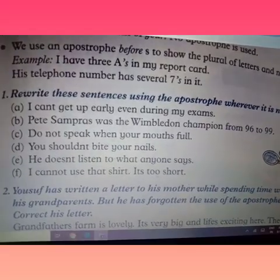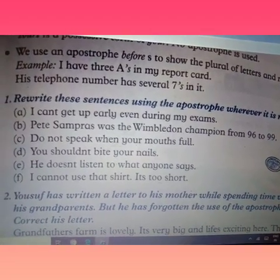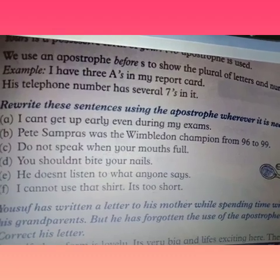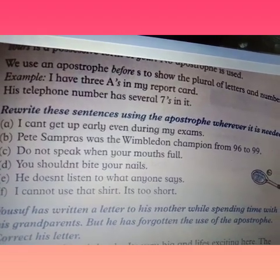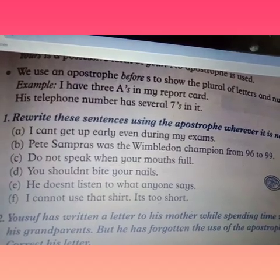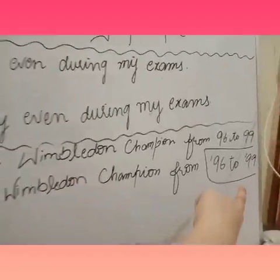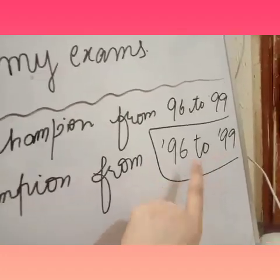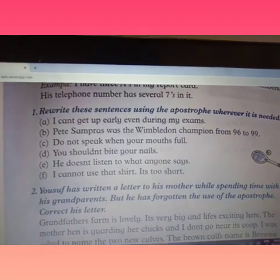Part B: 'Petty Sampras was a Wimbledon champion from 96 to 99.' Wimbledon champion means a tennis champion. The years 96 and 99 are abbreviated, so we need apostrophes. As I told you, with abbreviated dates or years you set an apostrophe before the number. So we write apostrophe-96 and apostrophe-99. Parts C through F will be completed by you on your own.